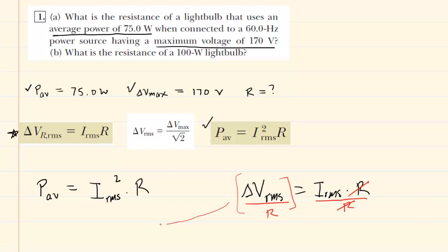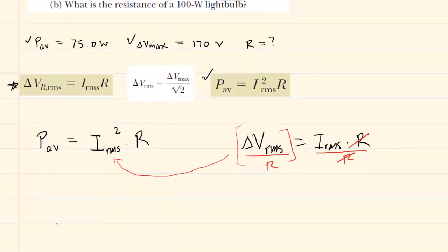We're going to substitute that into our power equation for the I_rms. So now we have average power equals, and let's put a parenthesis here, delta V_rms divided by resistance. Make sure we square that value times resistance.